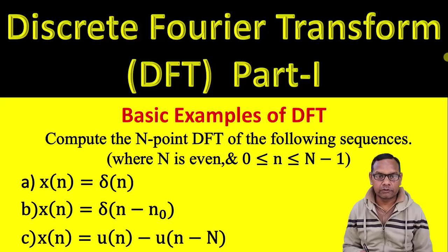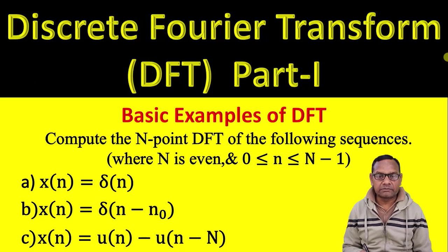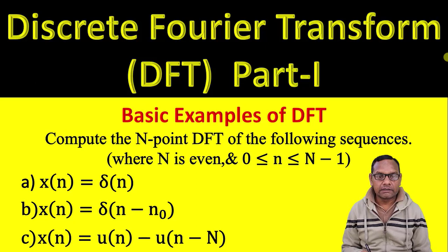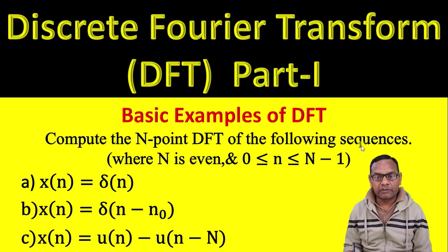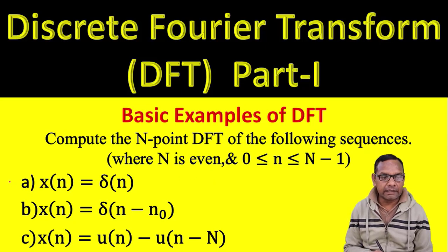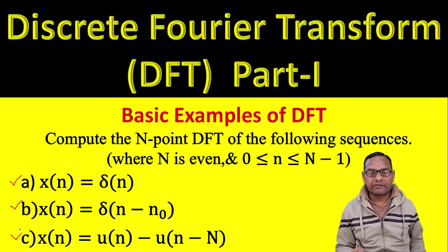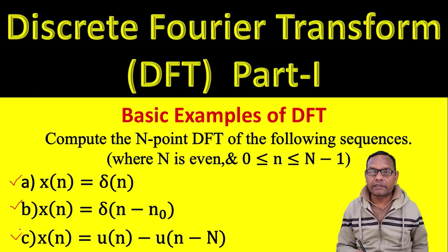Hi, today I am going to solve some basic problems of discrete Fourier transformation. These are the basic problems which are very essential for the basic knowledge of discrete Fourier transformation. According to the problems, see the slide — compute the N-point DFT of the following sequences where N is even. I am taking here three examples or three basic sequences which are shown here: first one, second one, and third one. These examples are very essential for the basic knowledge of discrete Fourier transformation.